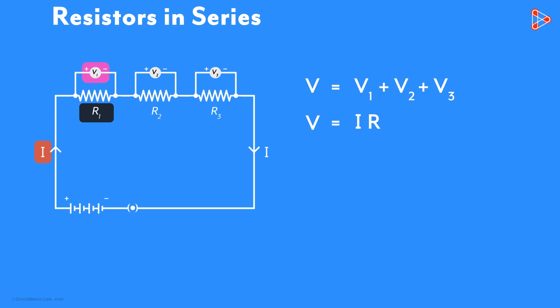Applying Ohm's law for the first resistor, we get V1 equal to I times R1. Similarly for the other two resistors, we apply Ohm's law to get two more equations.